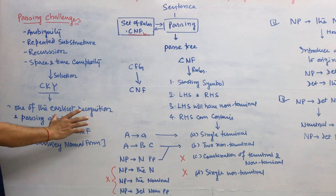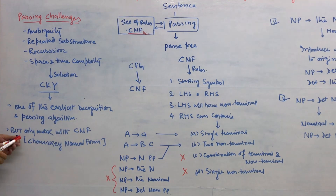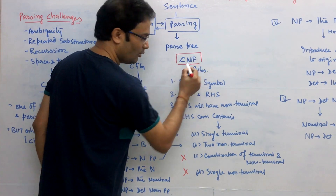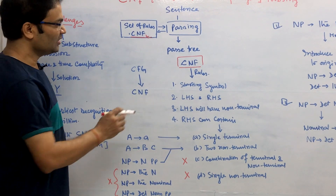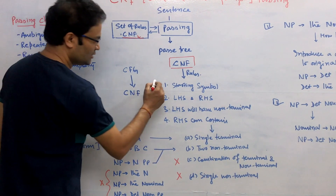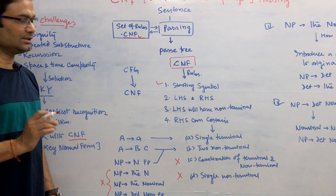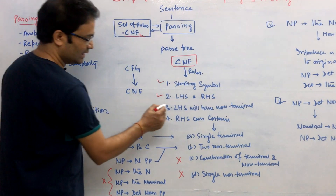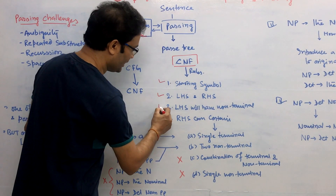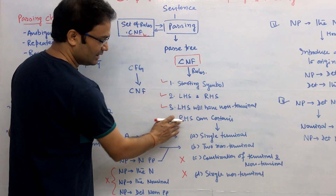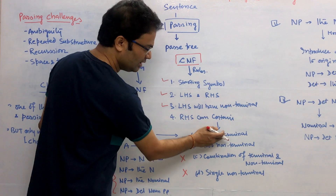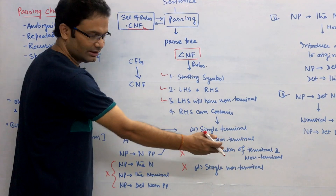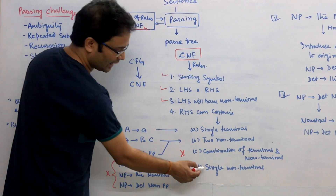CKY is one of the earliest recognition and parsing algorithms, but it works only on CNF — Chomsky Normal Form. Let us understand what CNF is. It should have one starting symbol, as in CFG. The RHS rules were also present in CFG. Third, the RHS can have only non-terminals. Now, the fourth key rule: the RHS can contain only one terminal or exactly two non-terminals. It cannot contain a combination of a terminal and a non-terminal, and it cannot have a single non-terminal.